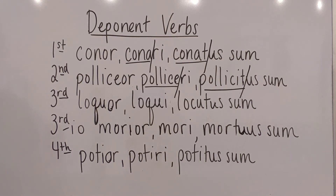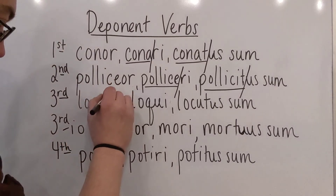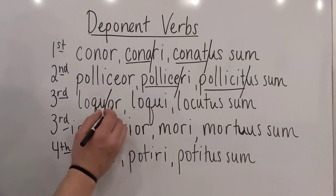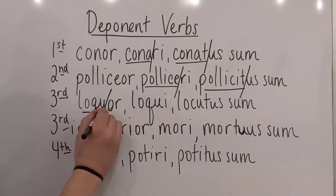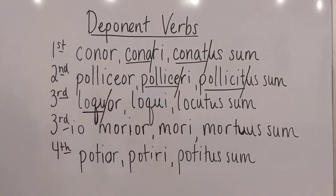Third seems to give everyone a lot of trouble. Just like with a normal third verb, like ago or duco, you get its present stem by chopping the -o off of the first principal part. Same game here: go to the first principal part. Instead of just chopping off the -o, because we're in passive land, chop off the -or. The stem is loque-. And you'll add the same vowel after the present stem as you do in a normal verb.